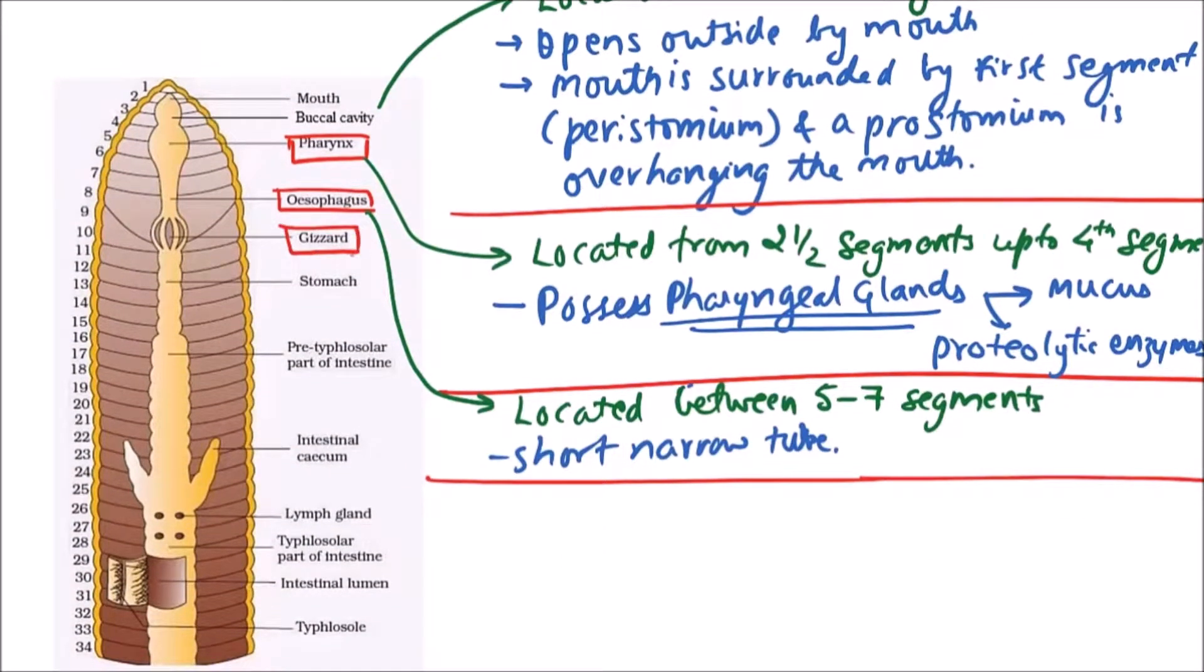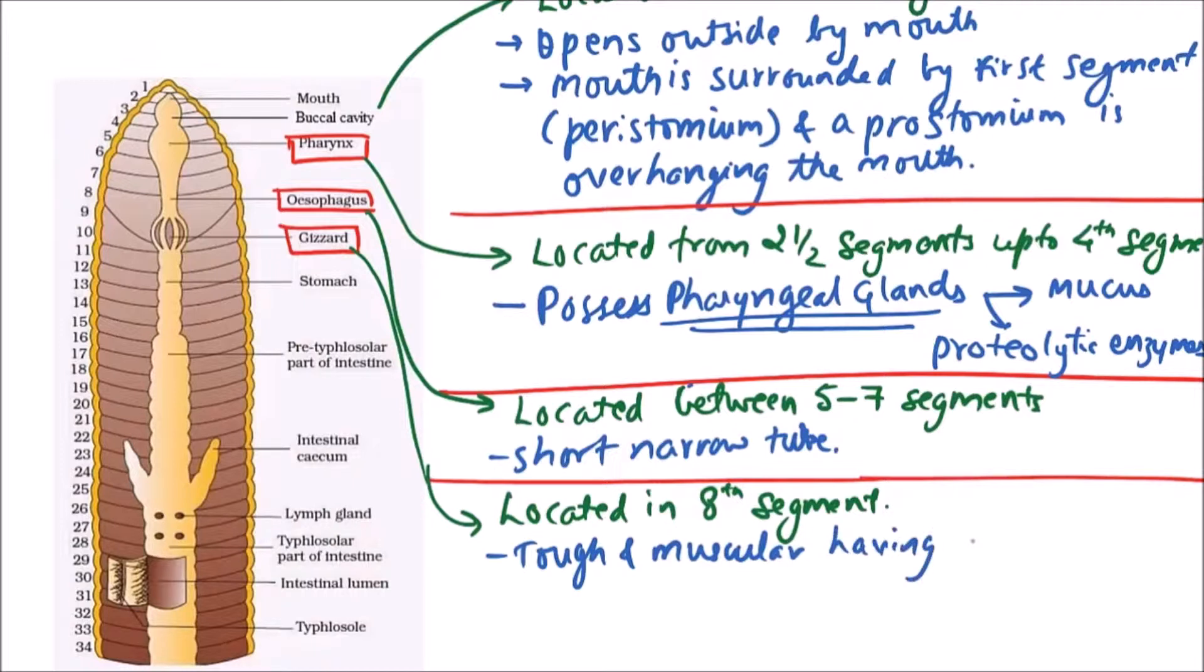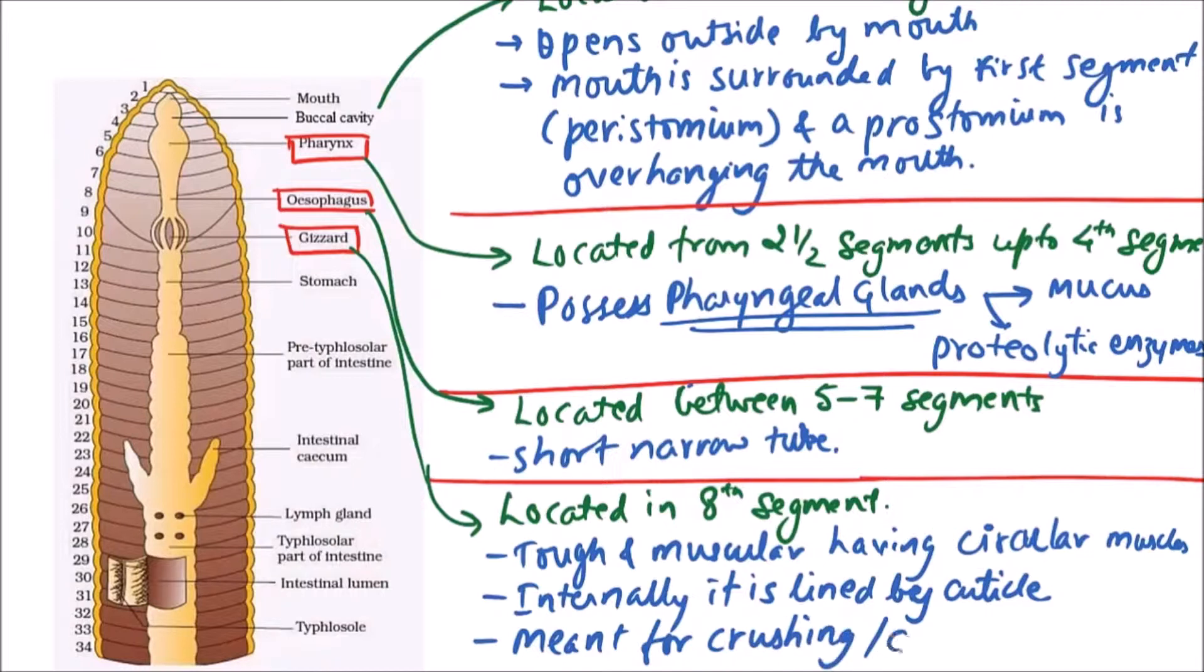Next one is gizzard. Gizzard is located in the eighth segment and it is tough and muscular, having circular muscles. Internally it is lined by cuticle. It is meant for crushing or grinding of hard particles.